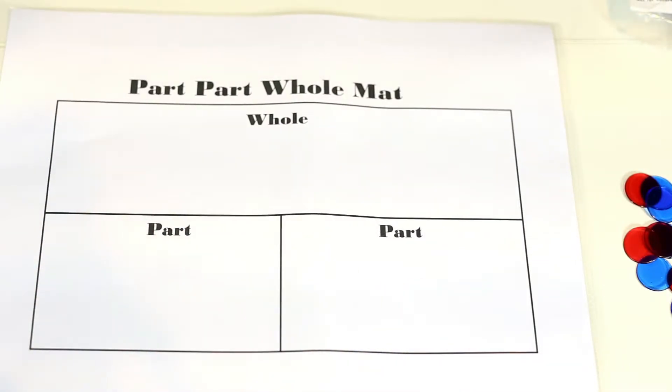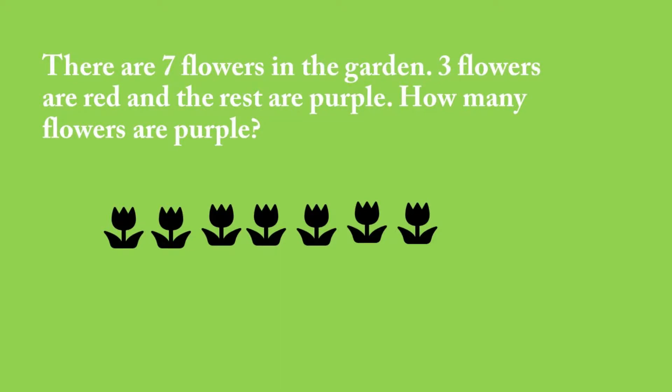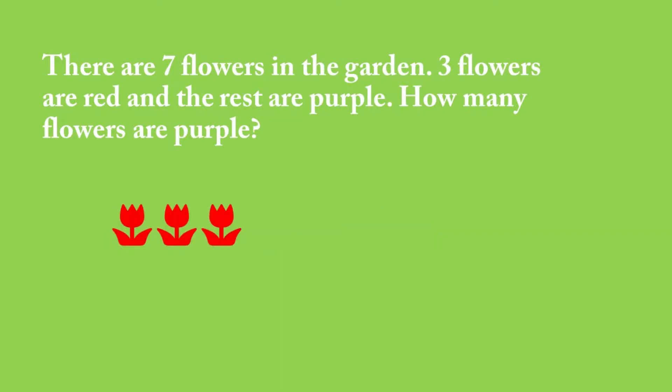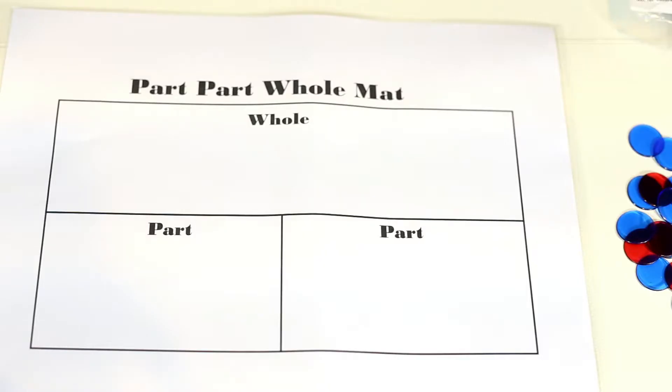For example, if we had the story problem, there are seven flowers in the garden. Three are red and the rest are purple. So we're basically trying to find out that missing part.